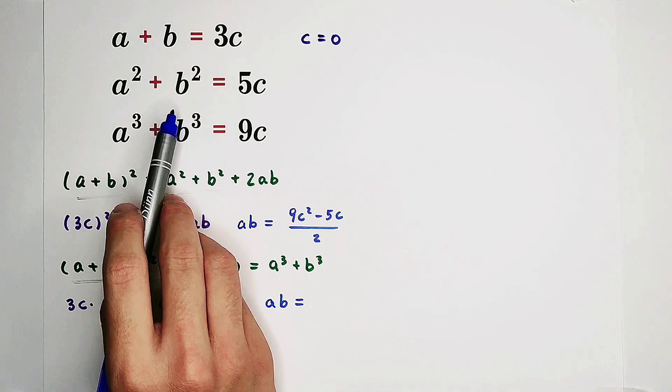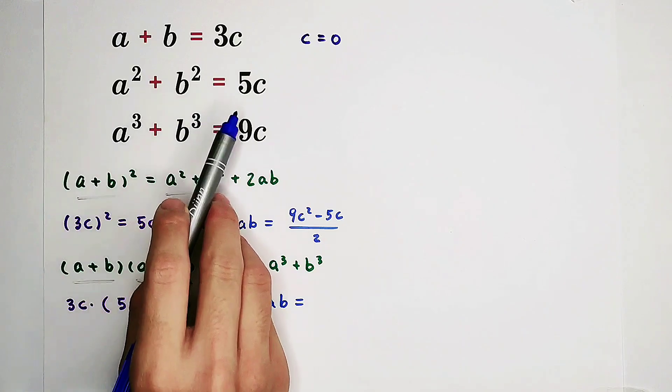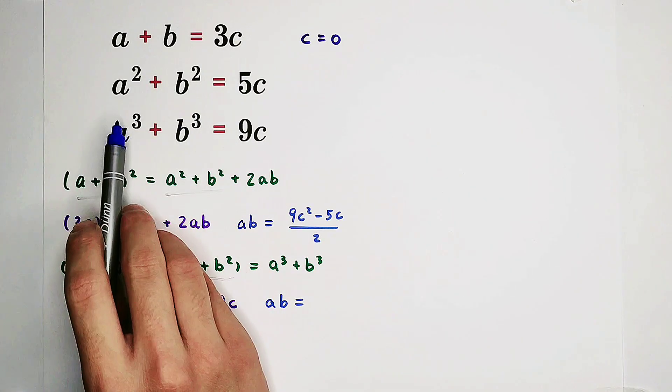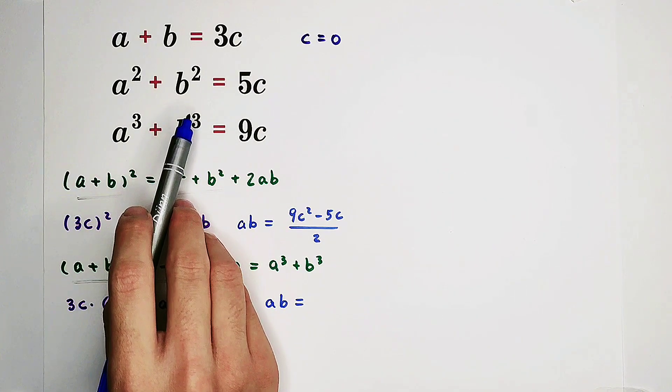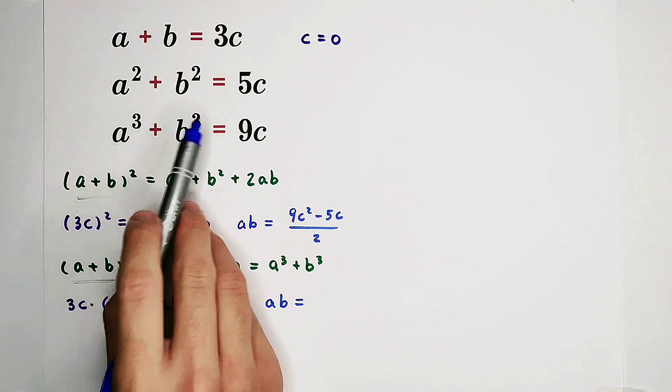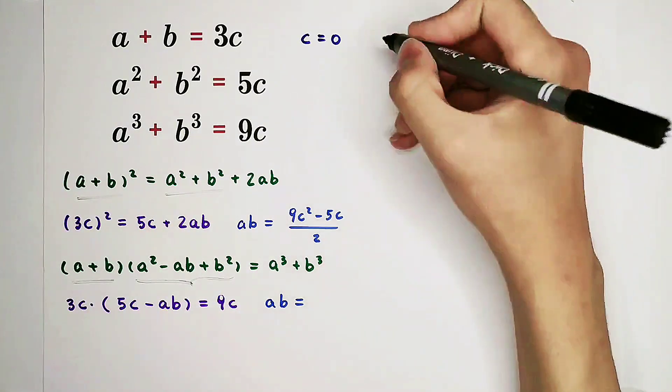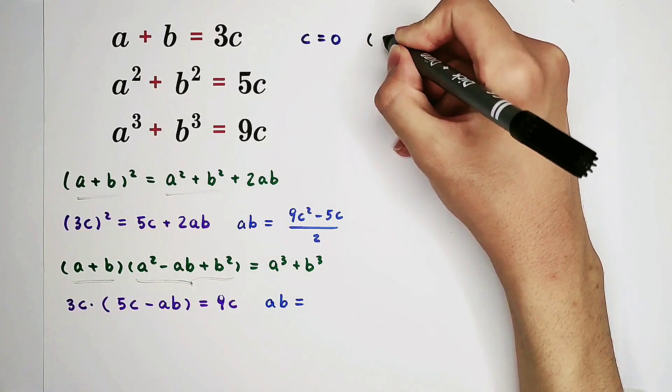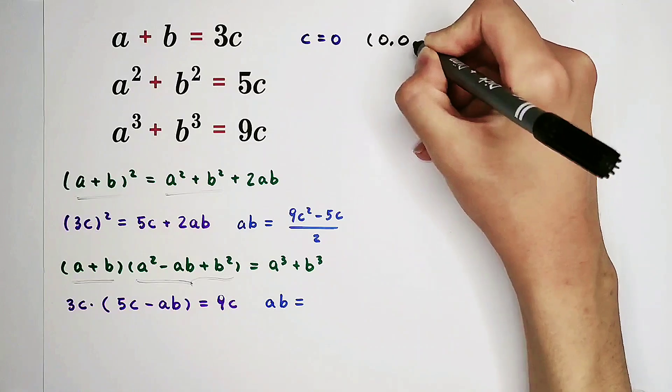Because a squared is not negative, b squared also not negative. However, their sum is 0. So that means a squared equals b squared equals 0. Therefore, a equals b equals 0. So now, we've concluded a solution. It is 0, 0, 0.